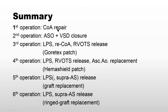Summary of the six operations: first was coarctation repair through the left chest; second was arterial switch and VSD closure; third operation addressed left PA, re-coarctation, and LVOTO relief. Still left pulmonary stenosis remained. The main pulmonary artery was pushing the ascending aorta backwards — that was the main issue causing the left pulmonary artery to be small.